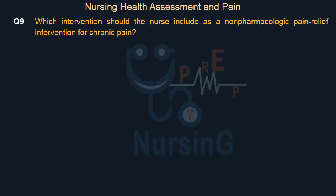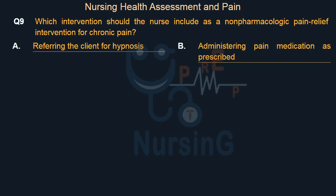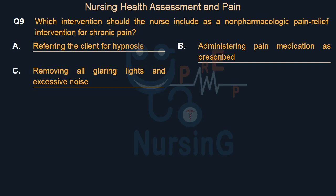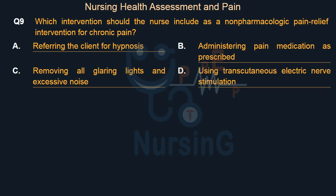Which intervention should the nurse include as a non-pharmacologic pain relief intervention for chronic pain? Option A: Referring the client for hypnosis. Option B: Administering pain medication as prescribed. Option C: Removing all glaring lights and excessive noise. Option D: Using transcutaneous electric nerve stimulation. The right answer is Option D: Using transcutaneous electric nerve stimulation.